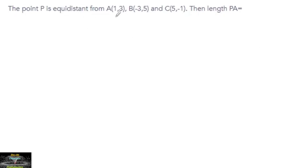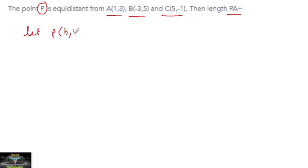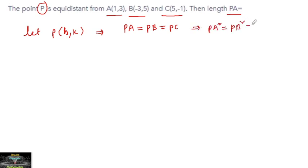The point P is equidistant from a, b, and c — we need to find the length of Pa. Since the point P is equidistant to all three points, Pa is equal to Pb is equal to Pc. We can also write this as Pa² = Pb² = Pc².